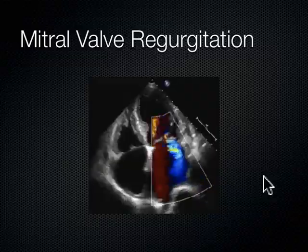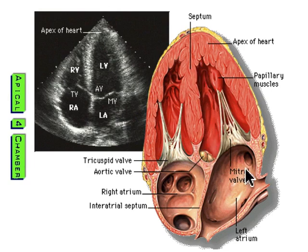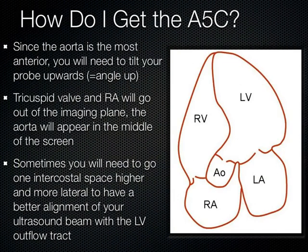During systole, the blood really should be going through the aortic valve and not back through the mitral valve. Let's talk now about this aortic valve — it's something called the apical five chamber view, or A5C, the fifth chamber being that aortic valve.